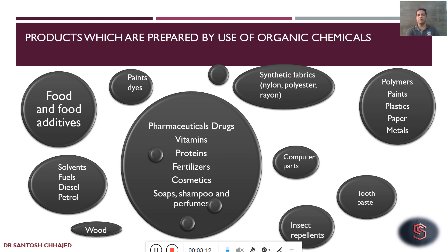In order to become master in whatever names I have written here — say for example, synthetic fabrics, polymers, food chemistry and all — understanding of organic chemistry is very important. Understanding chemistry of proteins, vitamins, cosmetics is very important. Unless and until we don't understand that, we cannot become master in those.